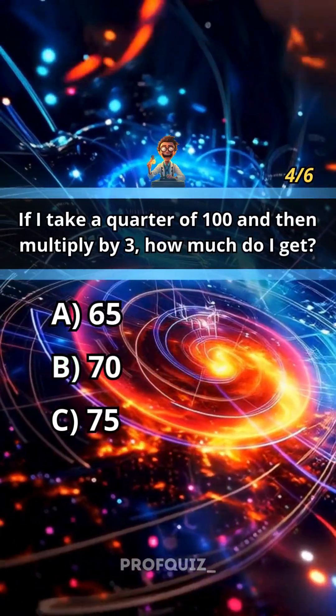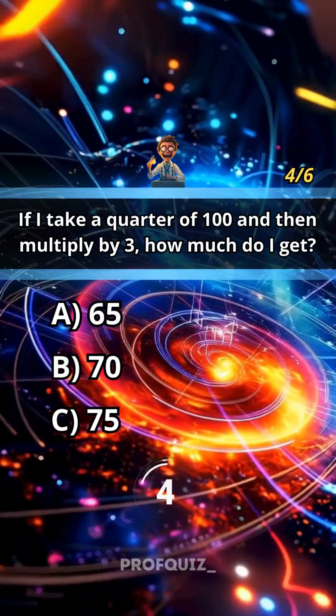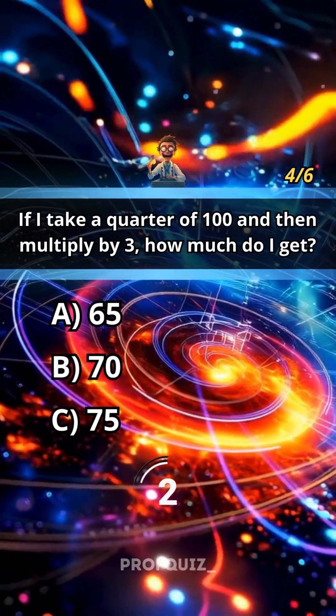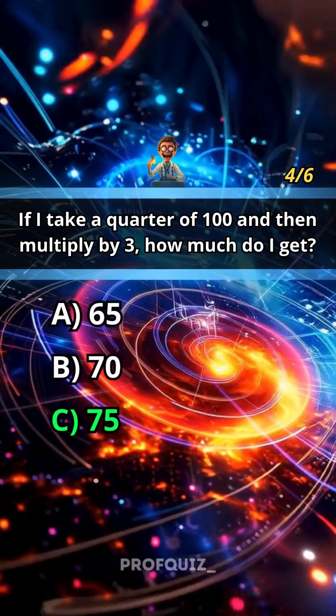If I take a quarter of 100 and then multiply by 3, how much do I get? Subscribe for more quizzes. Answer: C, 75.